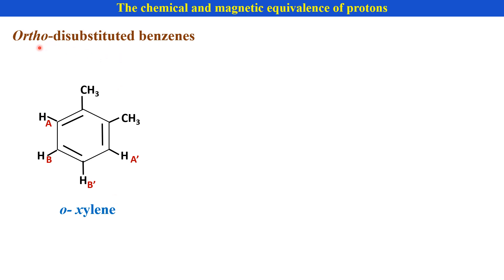The next example is ortho-disubstituted benzene — this is ortho-xylene. In the case of ortho-xylene also, the aromatic protons HA and HA', and HB and HB', are pairs of chemically equivalent but magnetically non-equivalent protons.